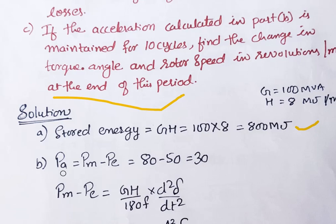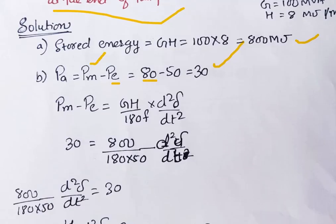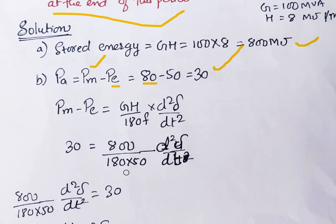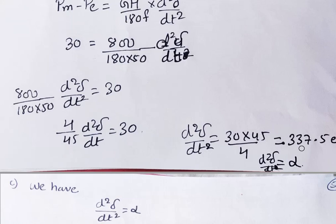Due to the disturbance, the mechanical power (driving force) is 80 MW and the electrical power (opposing force) is 50 MW. Since the driving force is greater, the change in power is positive: 80 − 50 = 30 MW. Applying this in the swing equation with G·H = 800 and 180 × 50 in the denominator, you get d²δ/dt² = 337.5 electrical degrees per second squared.